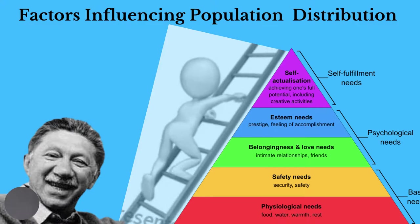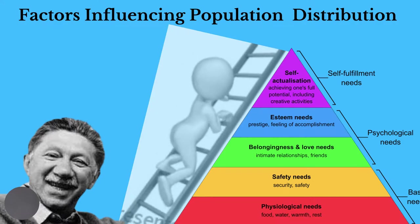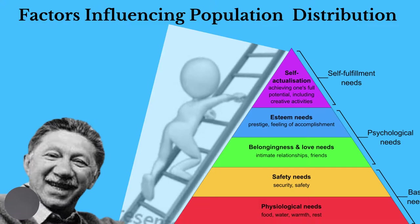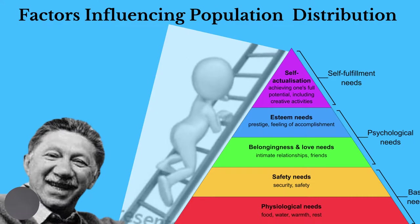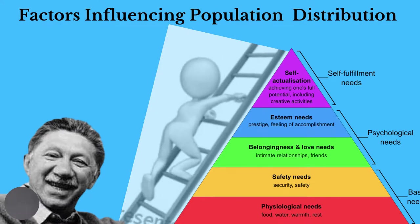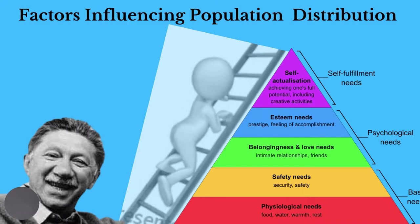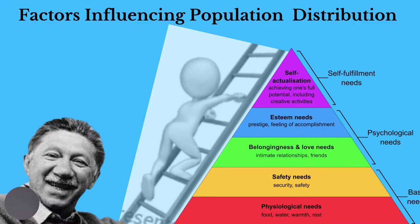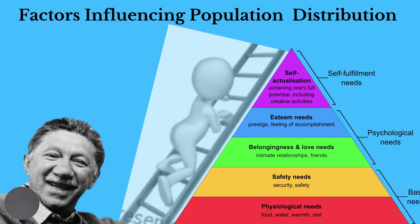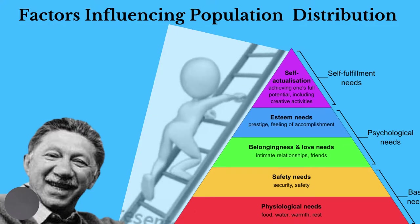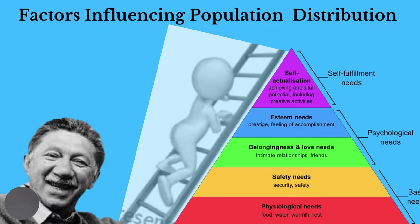People may also settle where they feel a sense of belonging and a sense of security. These will mean different things to different people. As people become more financially stable, they may have greater opportunities to choose, and to satisfy their higher-level needs, such as their self-esteem needs and even their need for self-actualization. Such persons may choose to live in neighborhoods where they can maximize their benefits.